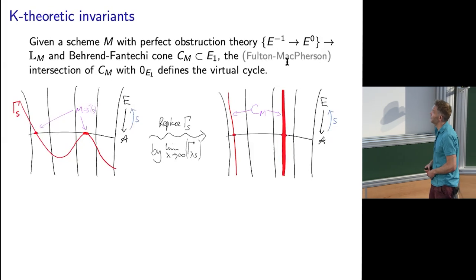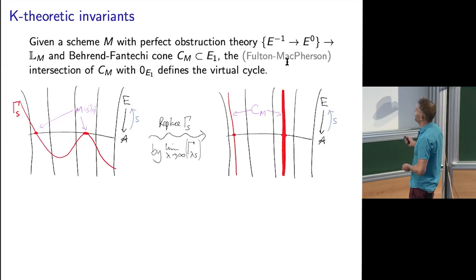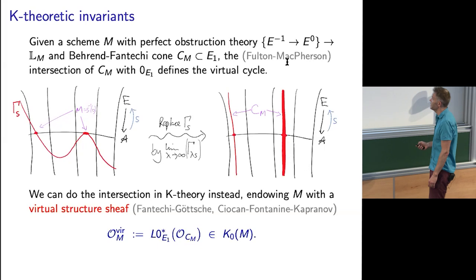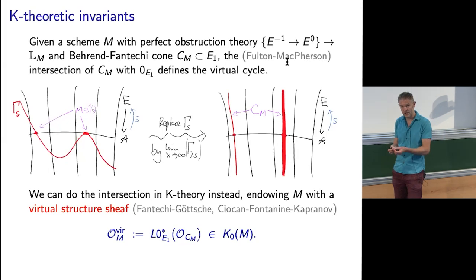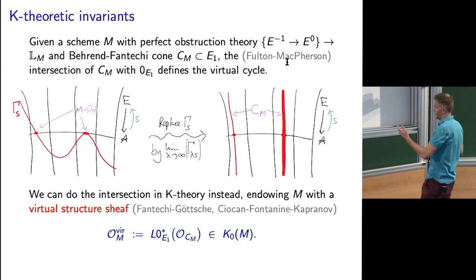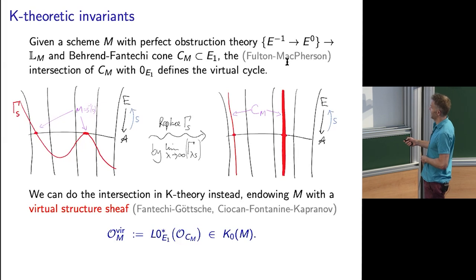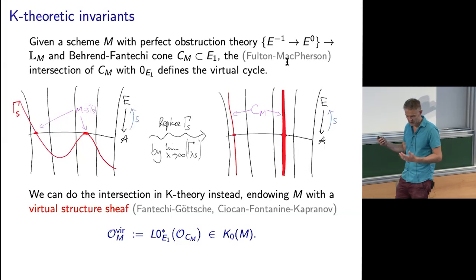What's K-theory about? Remember how we defined the virtual cycle in cohomology: we took a graph, made it vertical, got a cone, and intersected it with a zero section. You can do that intersection in K-theory instead. You take the structure sheaves and tensor them — the derived tensor product. The correct way is to take the pullback to the zero section of E1 of the structure sheaf of the cone. That gives something called the virtual structure sheaf on the moduli space — think of it as the structure sheaf of the virtual cycle, though it's not quite that.